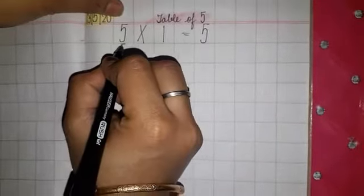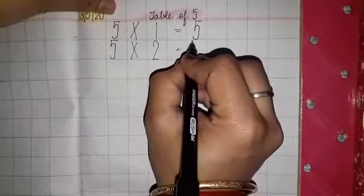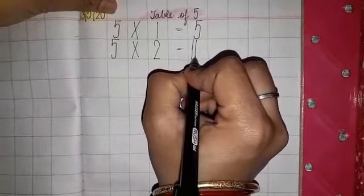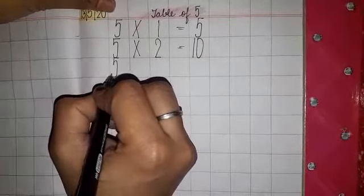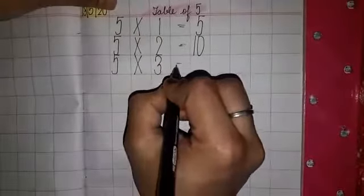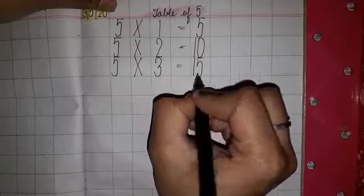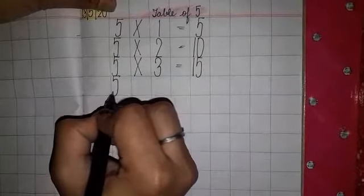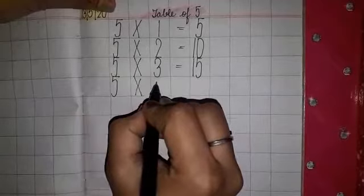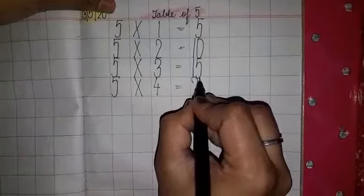Five one jump five. Five two jump ten. Five three jump fifteen. Five four jump twenty.